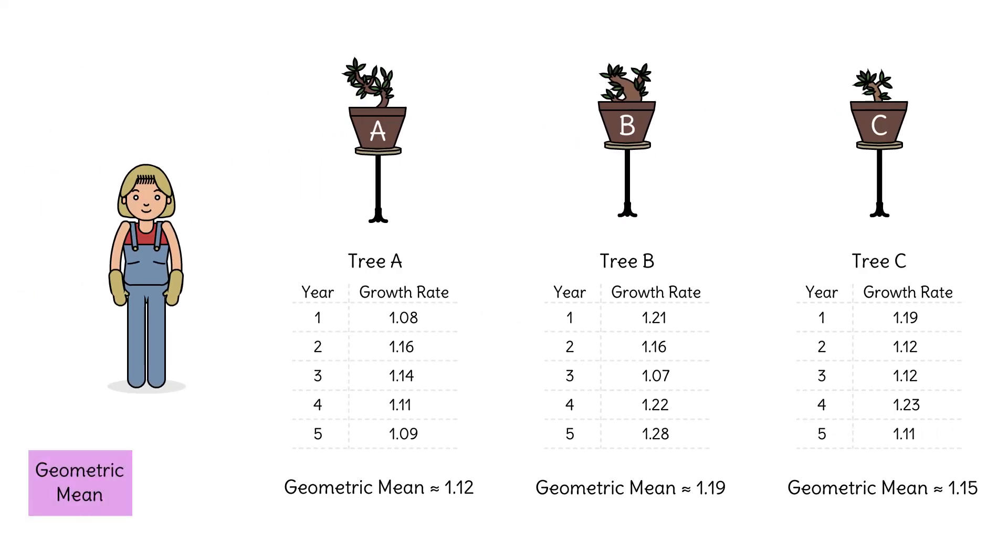Remember, the geometric mean for a set of n values is calculated by taking the nth root of the product of the values. It's frequently used in finance as well as in geometry. The geometric mean is a very powerful measure of center.